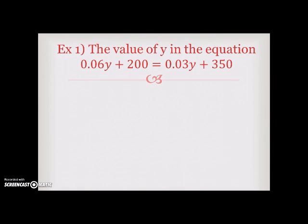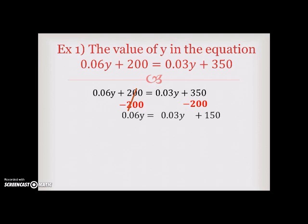Example 1. The value of y in the equation 0.06y plus 200 is equal to 0.03y plus 350. The goal is to solve for y. So the first step we're going to do here is subtract 200 from both sides. The 200 will cancel out on the left and then give us 150 on the right. So we are now left with 0.06y is equal to 0.03y plus 150.